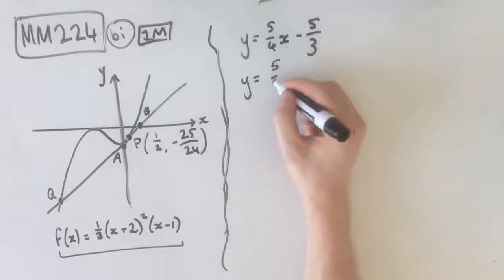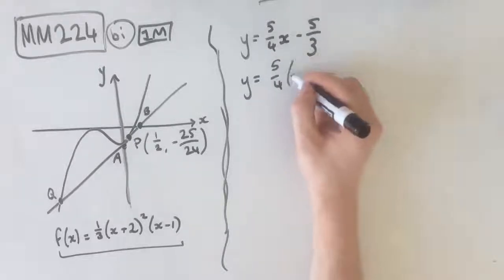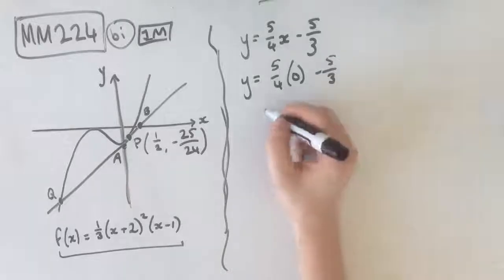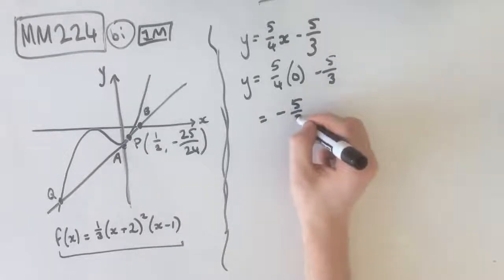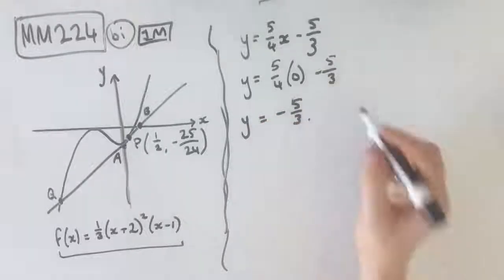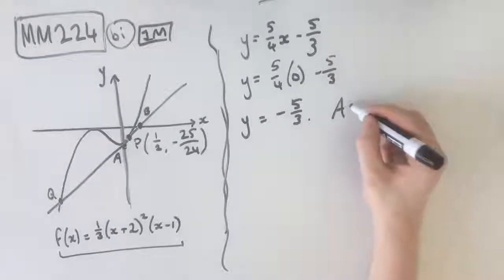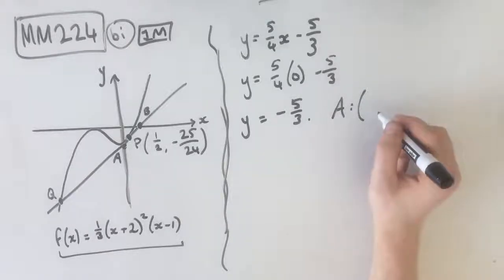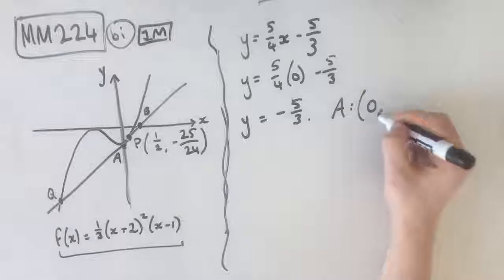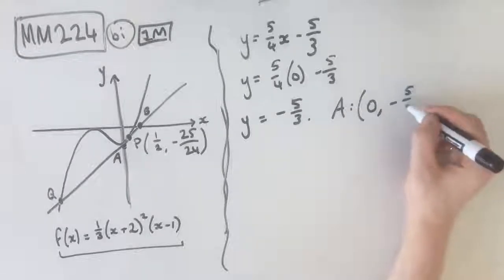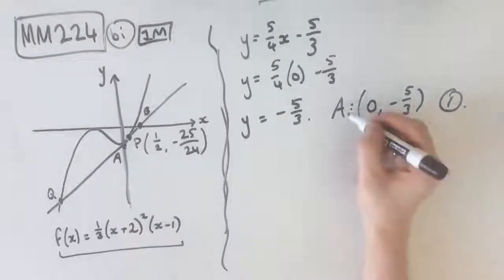Times 0, minus 5/3, gives us -5/3. Now that's not it. We actually need to state the coordinates of A and B, because that's what the question is asking for. So A occurs at (0, -5/3). That's our first mark there, guys. One mark.